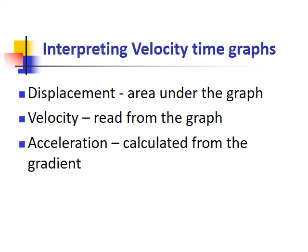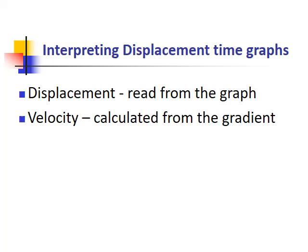Looking at velocity time graphs, we already know from National 5 that the area underneath the graph equals the displacement. We can read the velocity from the graph and calculate the acceleration from the gradient — which is the same as doing a = (v − u) / t. For the displacement time graph, we can read displacement directly and work out velocity from the gradient, since velocity equals displacement divided by time — the rate of change of displacement.